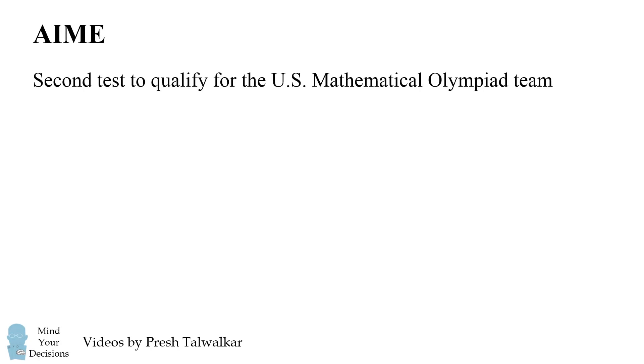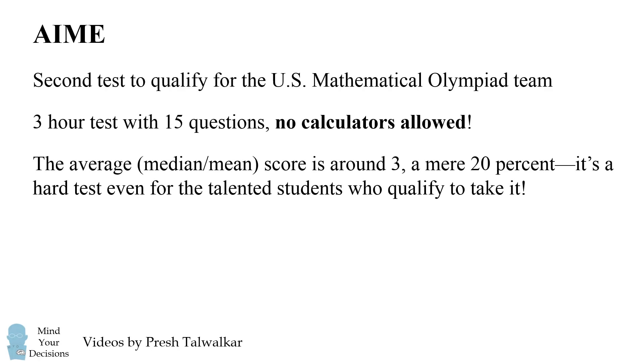The AIME is the second test to qualify for the US Mathematical Olympiad team. It's a 3-hour test with 15 questions and no calculators are allowed. The average score is around 3, which is a mere 20%. It's a hard test even for the talented students who qualify to take it.